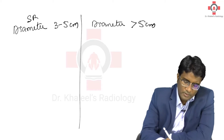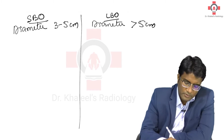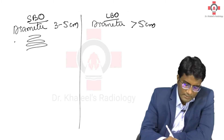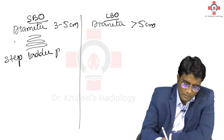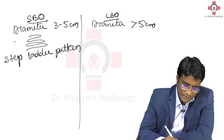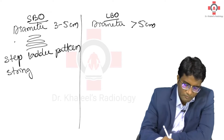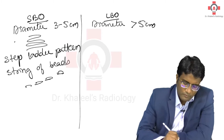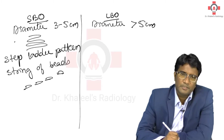In small bowel obstruction, because the bowel loops can be present one above the other, you get a step ladder pattern. You can also see multiple air fluid levels giving a string of beads appearance, where multiple small bowel loops form a string of beads.